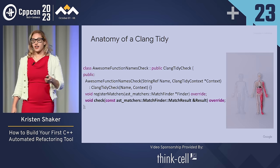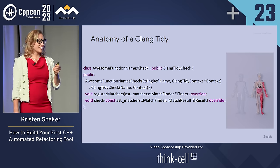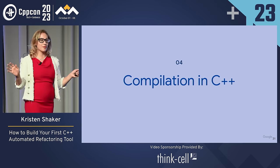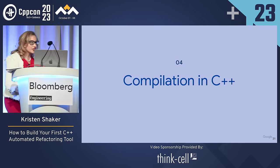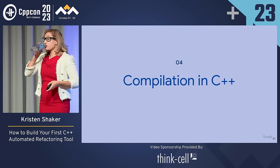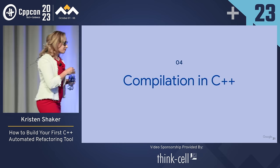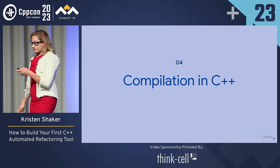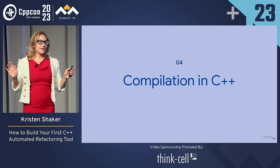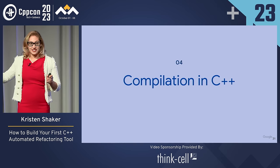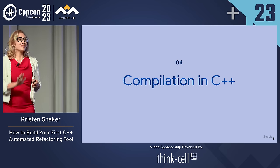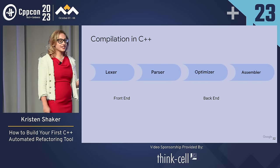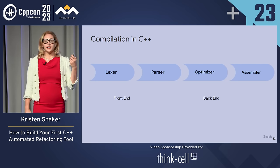To identify pieces of code we wish to update, we have to take a huge step back and talk about compilation in C++ in general. Compilation in C++ can roughly be broken down into four fundamental stages: lexing, parsing, the optimizer, and the assembler. These are colloquially known as the front end and the back end of the compiler.